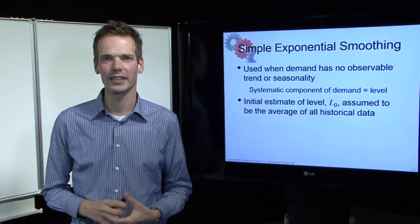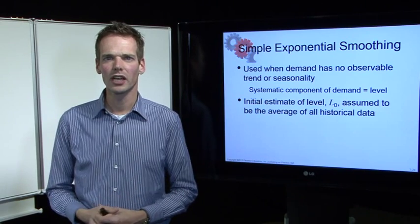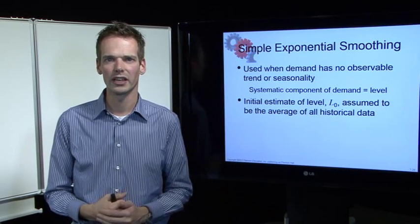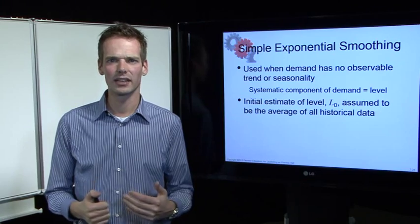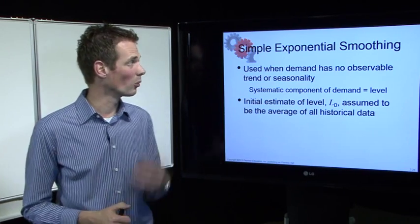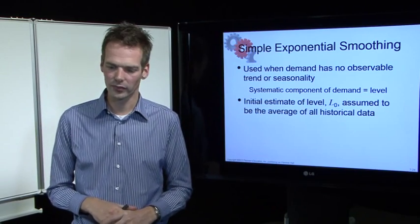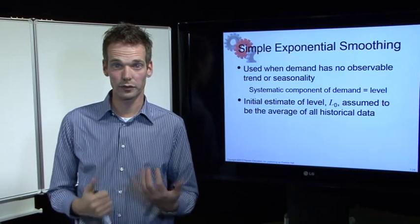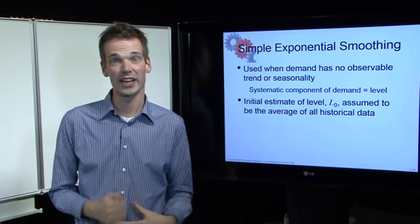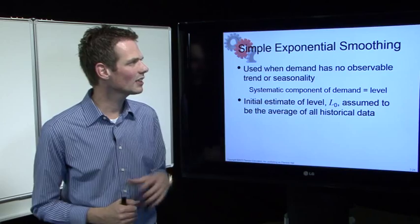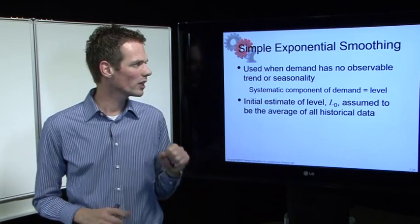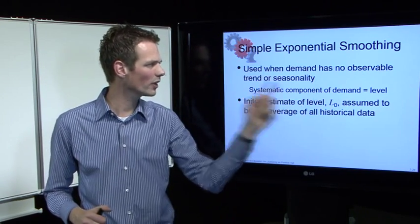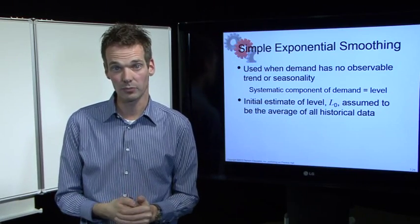Hello and welcome to this video series about chapter 7. In earlier videos we covered the introduction and the simple moving average, and in this video we will use simple exponential smoothing. Simple exponential smoothing is the second type of forecasting in the adaptive way — we also had the static way. In simple exponential smoothing we still do not observe any trend or seasonality, the same as with the simple moving average.